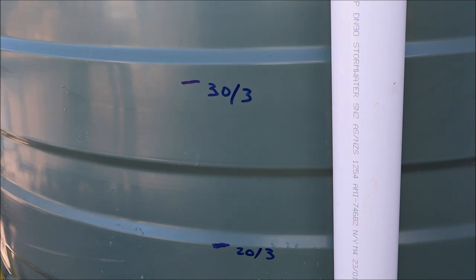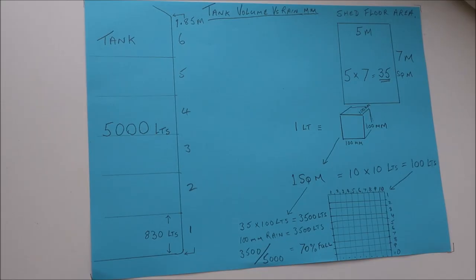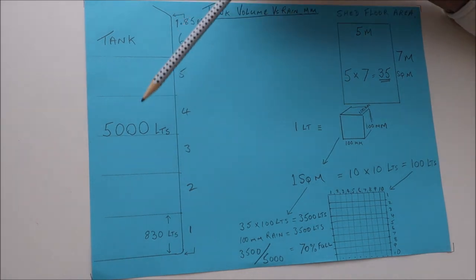Right, so this is the theoretical model of the tank volume versus rainwater in millimeters, how to work it out. Bear in mind that this is highly theoretical and in practice it doesn't always work out exactly. Start with the tank, it's a 5,000 liter tank.